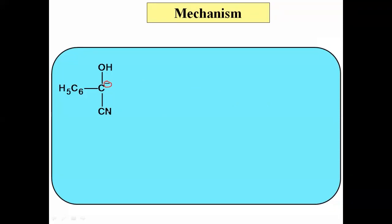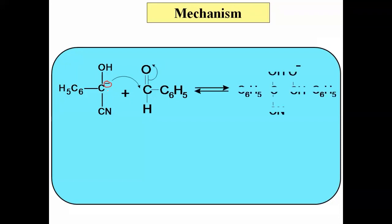In the second step, this carbanion acts as a nucleophile and attacks on another molecule of benzaldehyde, attacking the carbonyl carbon. The pi bond of the carbonyl undergoes breaking, the electron pair goes towards oxygen, oxygen acquires a negative charge, and we get another intermediate.